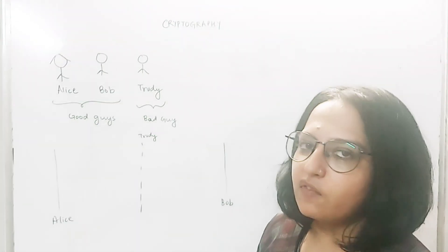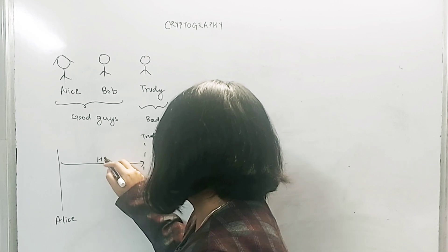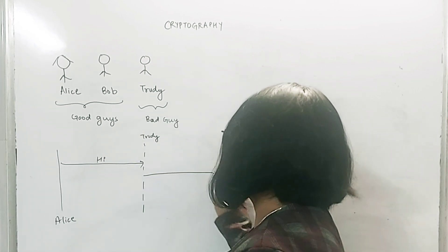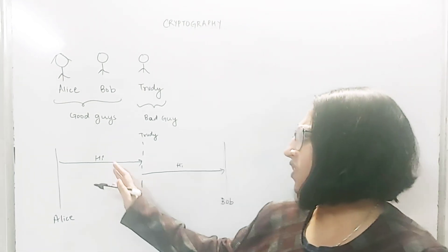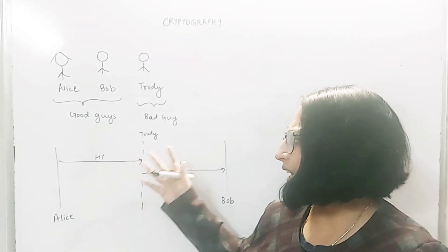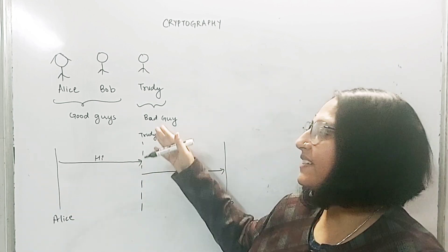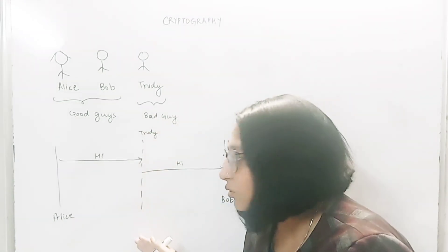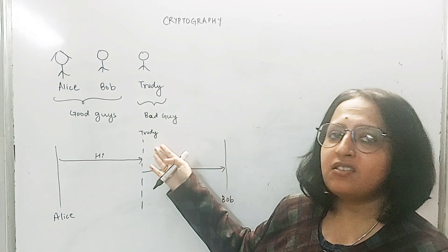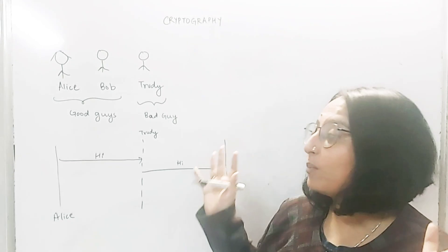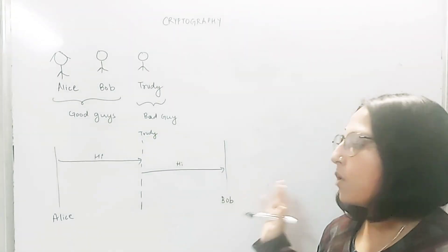So what happens is Alice sends 'Hi' to Bob. Trudy, who is intercepting the messages, is able to read this 'Hi' and thinks it's not a problematic message. So Trudy lets it pass and sends the same 'Hi' along to Bob.